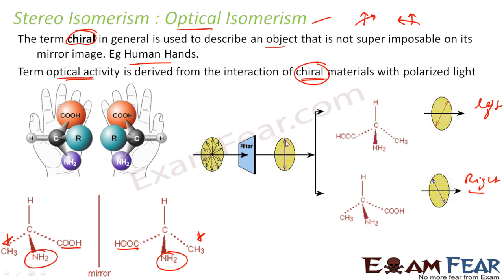This is generally associated with chiral objects, where the object is not superimposable with its mirror image. For example, a leaf is not a chiral object, but a human hand is chiral. Similarly, this particular compound — if you take its mirror image, it is not superimposable. And both these objects behave differently with polarized light: one rotates towards the left and the other rotates towards the right.